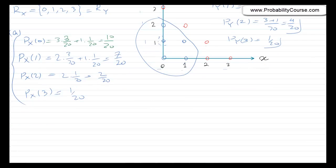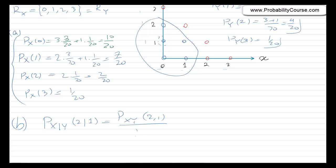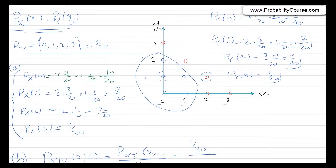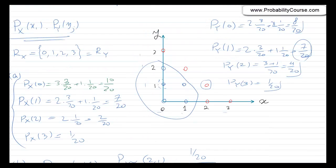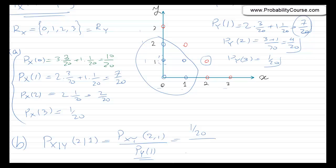For part b, the probability that X = 2 given Y = 1 equals P_{XY}(2,1) divided by P_Y(1). The joint probability at point (2,1) is 1/20, and P_Y(1) = 7/20. So the conditional probability is 1/7.